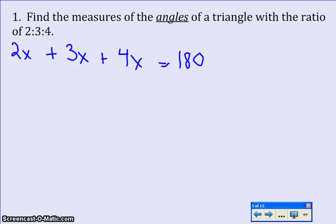So let's go ahead and clean up this problem. The left hand side, 2 plus 3 gives me 5, 5 plus 4 gives me 9, so I have 9x equals 180. When I divide both sides by 9, x gives me 20.